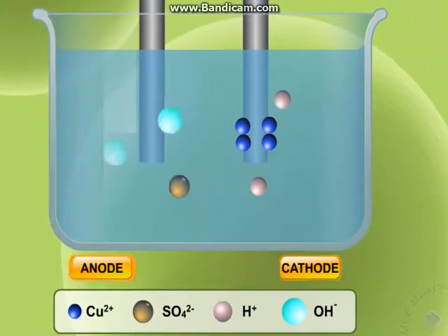All anions, sulfate ions and hydroxide ions, move to the anode. What happens to ions at the electrode?